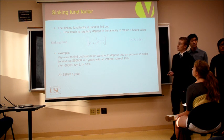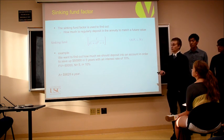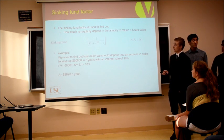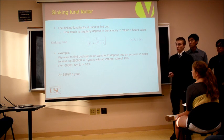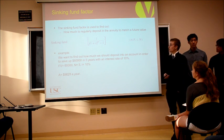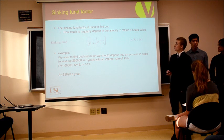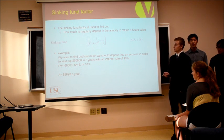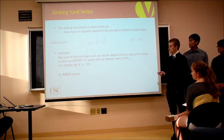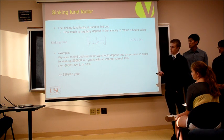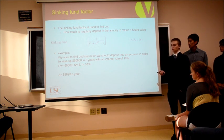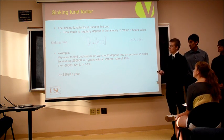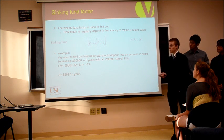Finally, we have the sinking fund factor, which is the inverse of the series compound amount factor. It allows us to find how much to deposit or withdraw in the annuity to match a desired future value. For example, we want to find how much to deposit each year to save up $60,000 in five years with an interest rate of 4%. By plugging these values into the formula, we find $9,828 per year.